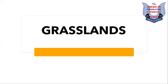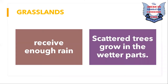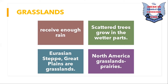Moving on to grasslands: grasslands receive enough rain for grasses to grow up to about one meter high, and scattered trees grow in the wetter parts. The Eurasian Steppe and the Great Plains of North America are grasslands. In North America, grasslands are called prairies. The temporary grasslands of South America are called pampas. The plains of Central Africa are called savannas.